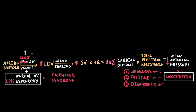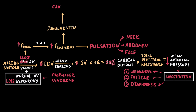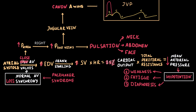Atrial systole occurring when AV valves are closed leads to rapid atrial pressure elevation. Right atrial pressure elevation conducts to the systemic veins and causes rapid increases in systemic venous pressure. This causes pulsation of the neck, face, and abdomen. Pressure also increases in the jugular vein, producing cannon A waves in the jugular venous pressure curve. High left atrial pressure conducts to the pulmonary circulation and causes cough and rales in cases of fluid transsudation into the lung tissue.